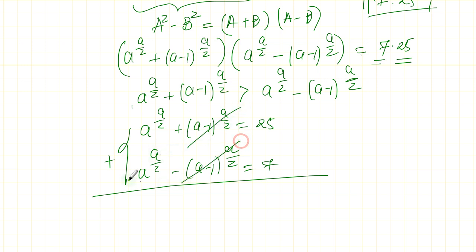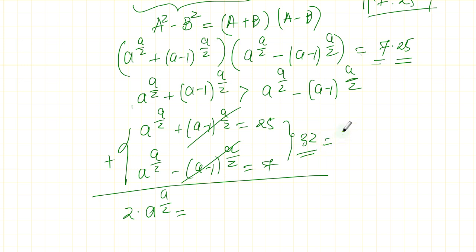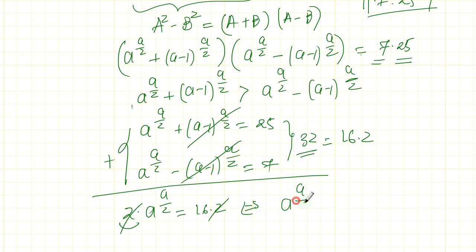We can add these two equations. The (a minus 1) terms cancel, giving 2 times a to the a over 2 equals 25 plus 7, which is 32. I can write 32 as 16 times 2, so the 2 cancels and we get a to the a over 2 equals 16.